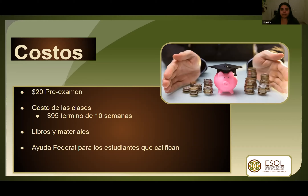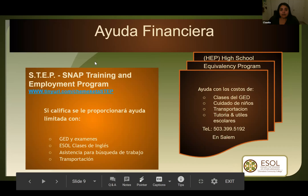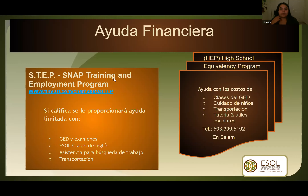Hay una ayuda federal para los estudiantes que califican y esta ayuda se llama SNAP — quiere decir SNAP Training Employment Program. El programa se llama STAP y es para estudiantes que reciben estampillas de comida. Tal vez pueden calificar por este programa. Si califican, la ayuda financiera puede pagar por las clases, por los libros, por los exámenes. Entonces, si piensas que calificas para este programa, por favor comunícate conmigo y puedo ver si calificas.